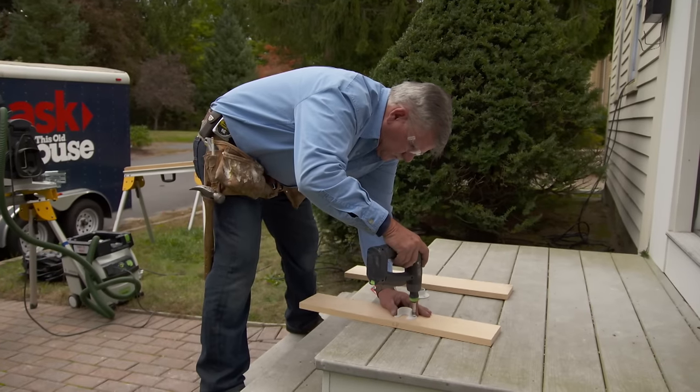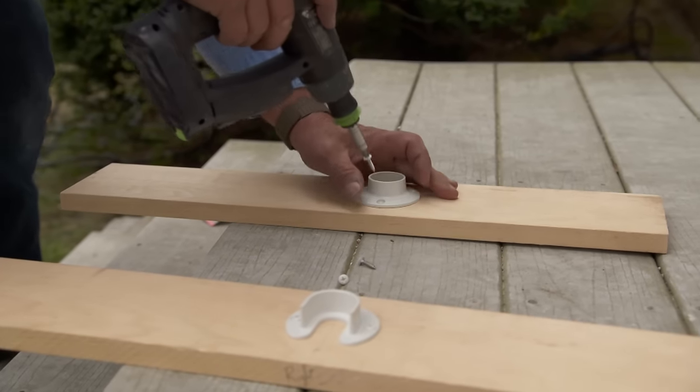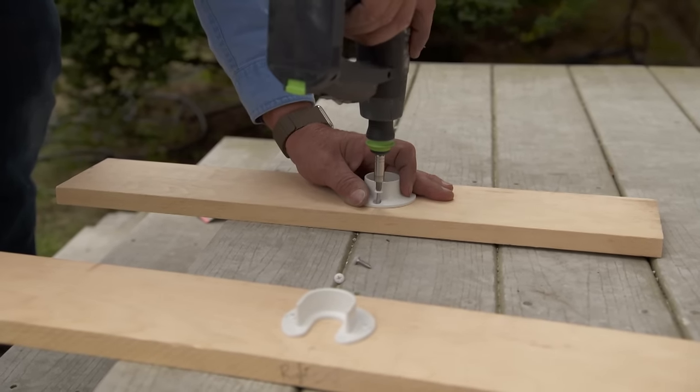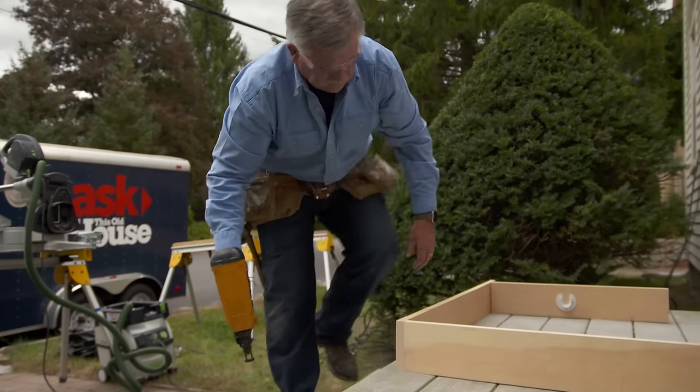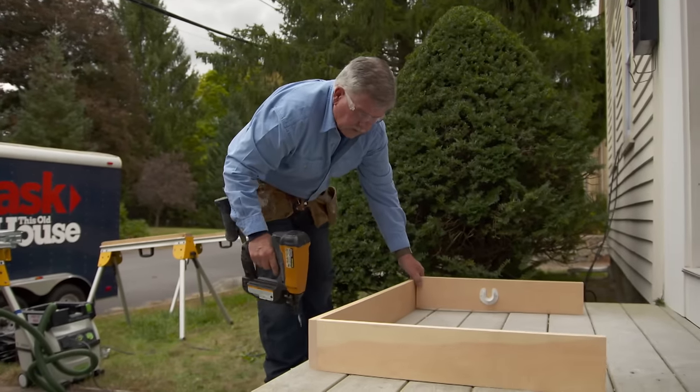To make the job easier, I'm assembling the shelf cleat, including the closet pole brackets, outside. That way we'll be able to install it in the closet as one unit.